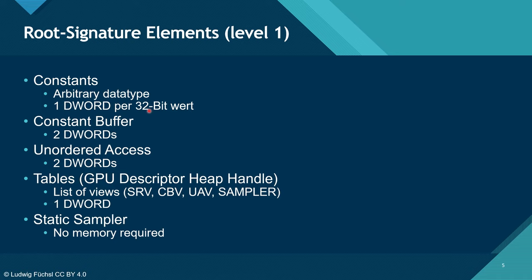The descriptor table just requires 1 DWORD because it's just an offset into a descriptor heap — this offset is 32-bit. It defines the starting point of an array of descriptors which describes, for example, shader resource views, constant buffer views, unordered access views, or samplers. Samplers always require a different list because they are in a different descriptor heap. The table is a link to a descriptor heap starting point and you have to make sure the actual descriptor heap is big enough and contains valid data.